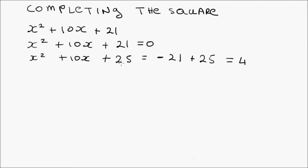This is now in the form of a perfect square. We can rewrite this as x plus half the coefficient of x, which is 5, so it's x plus 5, all squared, equals 4.